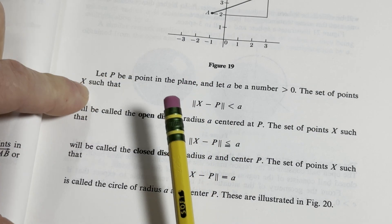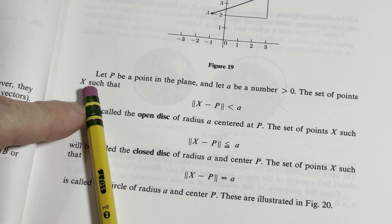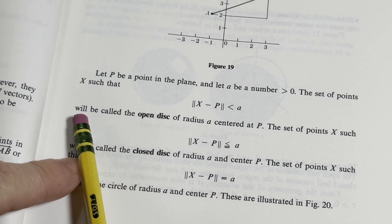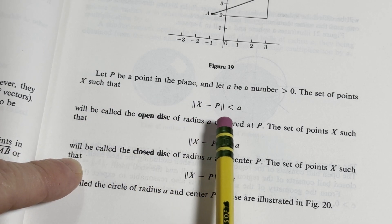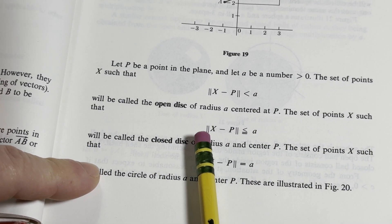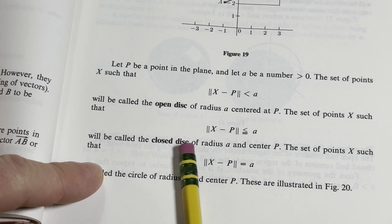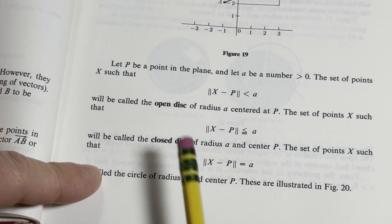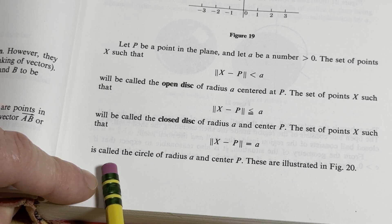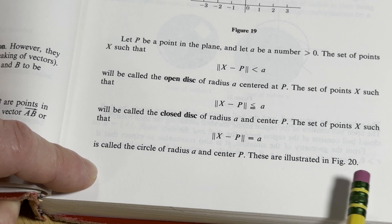Let p be a point in the plane and a a number greater than zero. The set of points x such that the distance between x and p is less than a will be called the open disc of radius a centered at p. The set of points x such that the distance between x and p is less than or equal to a is called the closed disc of radius a and center p. And the set of points such that the distance between x and p is equal to a is called the circle of radius a and center p. These are illustrated in figure 20.